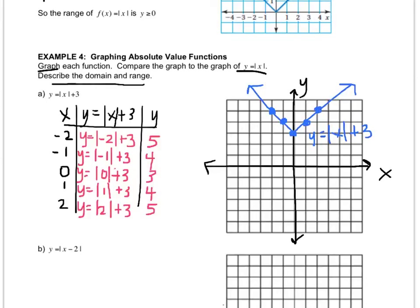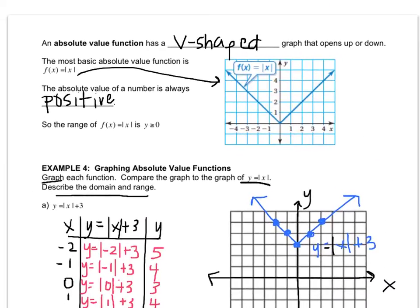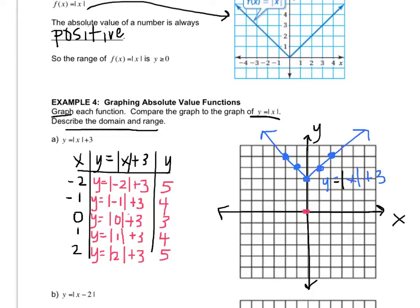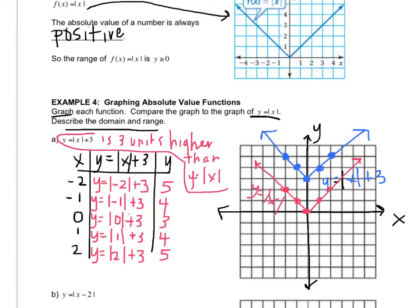It also says that we have to compare it to the original function. So I'm just going to look at this and just copy it over. You don't have to make a table for it. After a while, you'll know what it looks like. So this is the graph y equals absolute value of x. I just copied it from the graph, and now I have to compare it. So y equals absolute value of x plus 3 is 3 units higher than y equals absolute value of x.